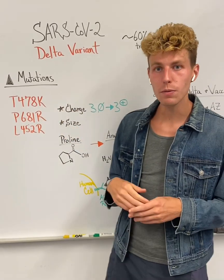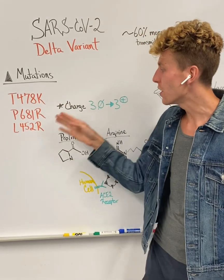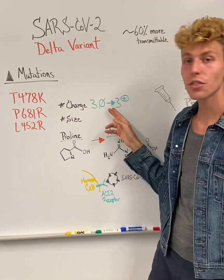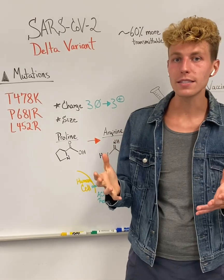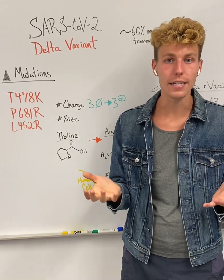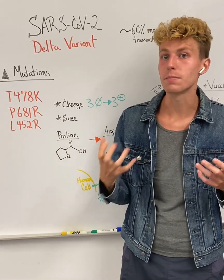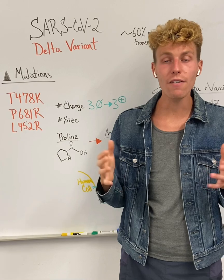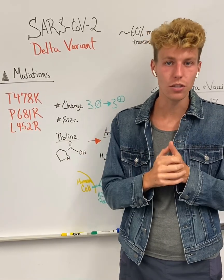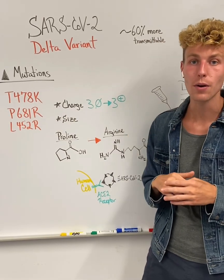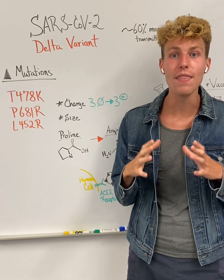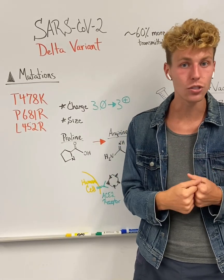For the specific mutations of the Delta variant, the charge changes from three neutral amino acids to three positive amino acids. Amino acids have a positive, negative, or neutral charge — you can think of this like a magnet: sometimes they attract each other, sometimes they repel, and that affects how they interact with other proteins as well as how they finalize their shape. By changing to three positive amino acids, this can change how the spike protein comes together and how it can interact with the ACE2 receptor.